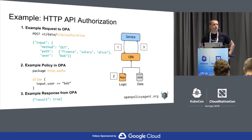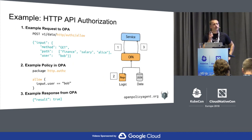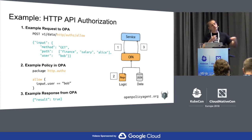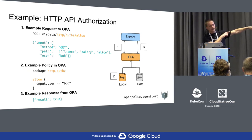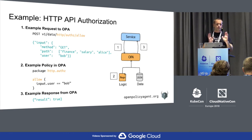Does OPA store any state, and can authorization modify state? OPA does not store mutable state. It is essentially stateless — the decisions it makes are entirely based on the state it has. You could, from outside, push new state into OPA through the JSON API after the service gets a decision, but we have not recommended that.